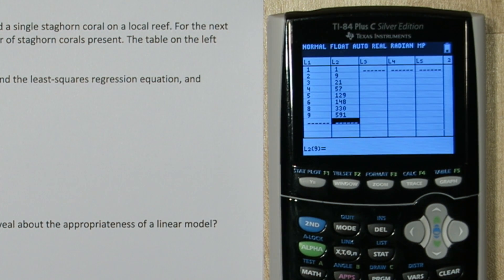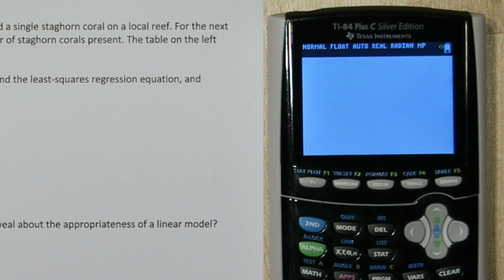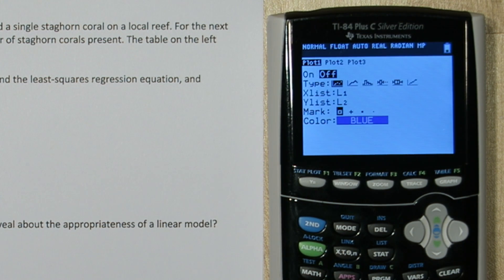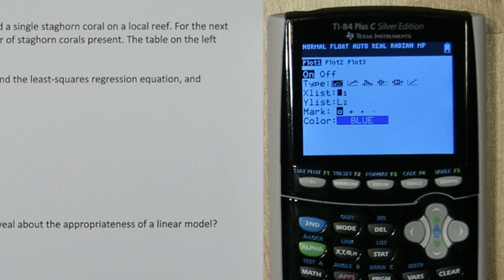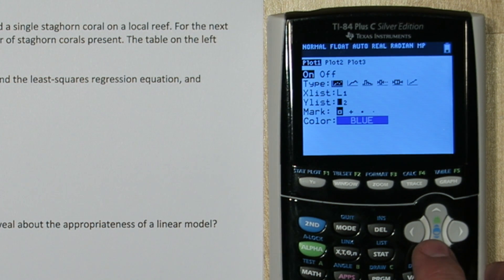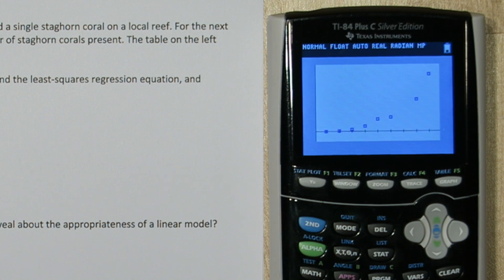To make a scatterplot, press 2nd and y equals. This is our stat plot menu, and we'll press enter on plot 1. Press enter again to turn it on. It's already set to scatterplot, and we have our number of years as explanatory variables and our number of staghorn corals in list 2, so we're good to go. Press zoom and 9, and here's our scatterplot.